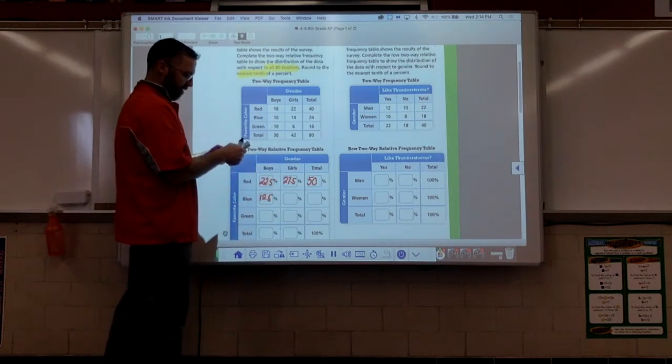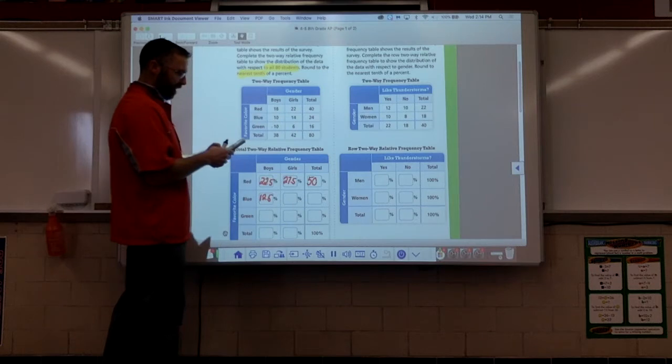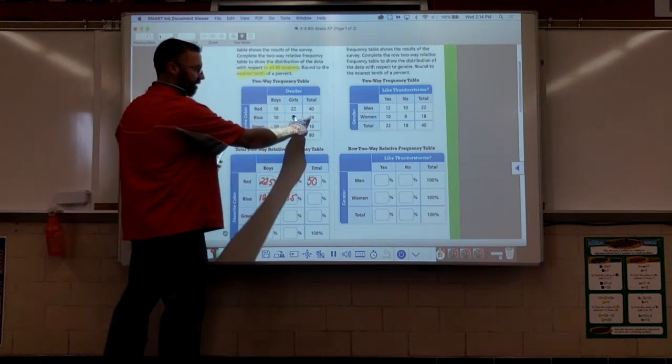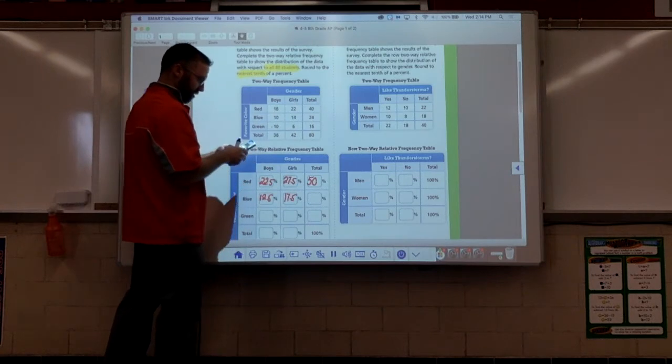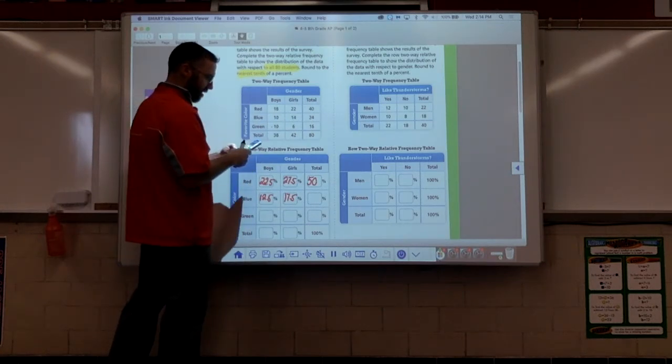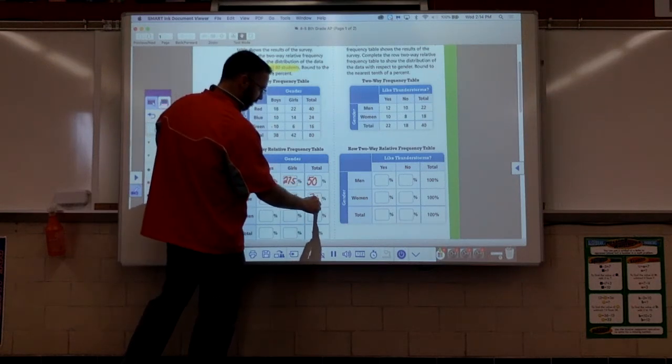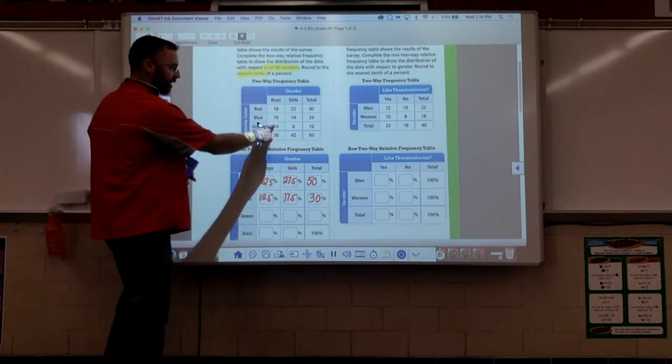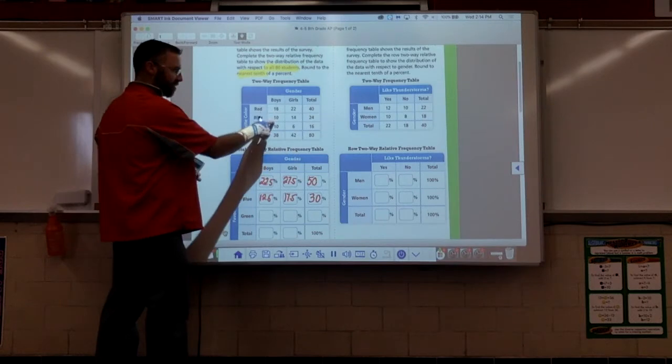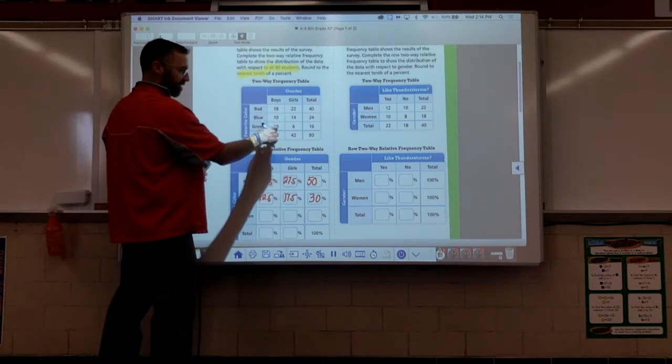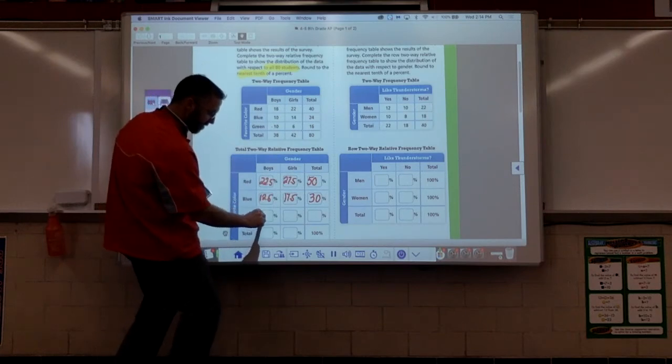14 out of 80 times 100, this comes out to be 17 and a half. Next one, 24 out of 80 times 100, this comes out to be 30%. We go down to green. Green is 10 out of 80. This 10 out of 80 is going to be the same, this is 12 and a half.